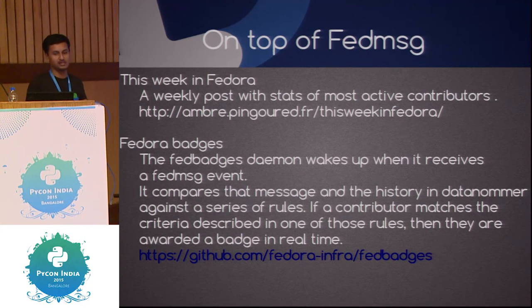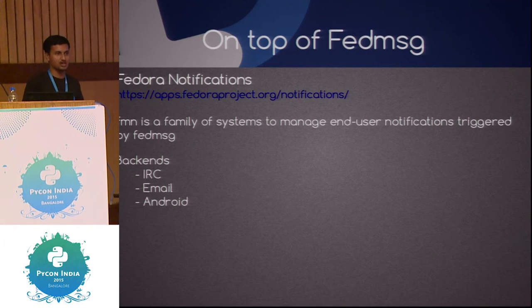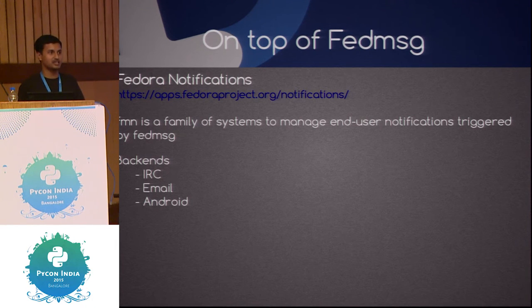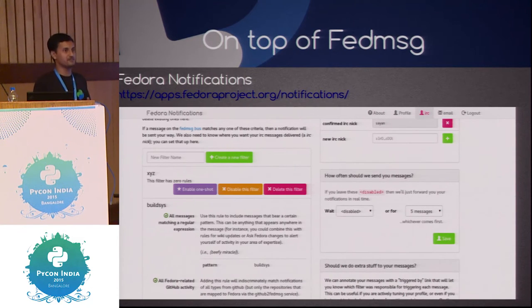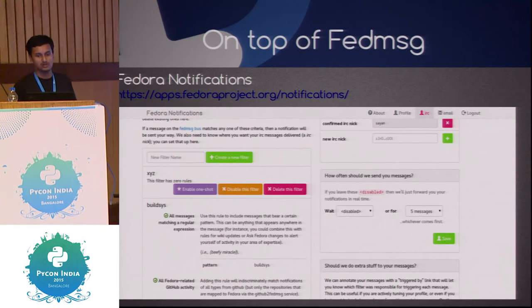The FedBadges project has a FedBadges daemon which receives FedMessage data and checks if a particular person needs to be awarded a badge. Finally there's FedoraNotifications — using FedMessage data you can get notified. There's a desktop version called FedMessage Notify, and a separate project FMN which gets data into IRC, Android, and email. You can configure filters on the web page for what data you want, and there are IRC, email, and Android backends — all based on the FedMessageHub project.